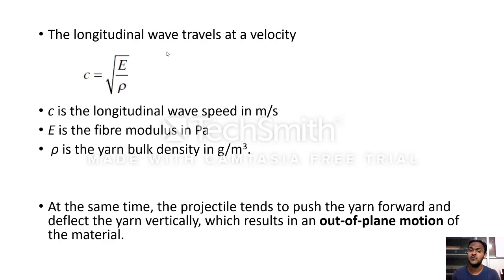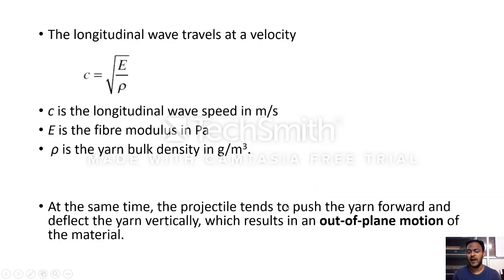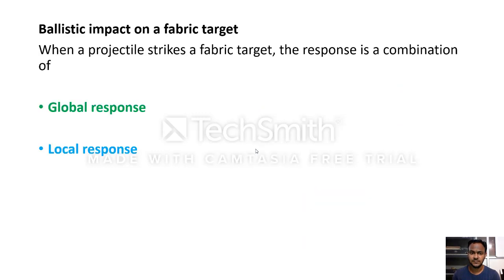So, two things happen: one is the longitudinal wave velocity causing yarn stretching and in-plane movement, and another is the projectile tends to push the yarn forward and deflect it vertically, resulting in out-of-plane motion of the material. In the longitudinal wave front formation there is in-plane movement where the yarn gets stretched, whereas when the projectile strikes it also forms a transverse wave front causing out-of-plane motion where the yarn deflects vertically. These two wave fronts are very important in dissipating the energy.